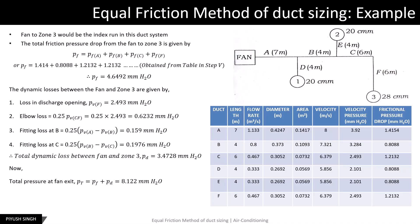The total pressure at fan exit is the sum of the frictional pressure drop in the index run plus the dynamic losses in the index run, which comes out to be 8.122 mm water. The static pressure at fan exit is the difference between the total pressure and the velocity pressure in duct A at the fan exit, which comes out to be 4.202 mm water.